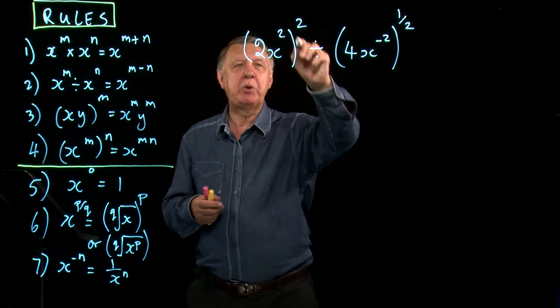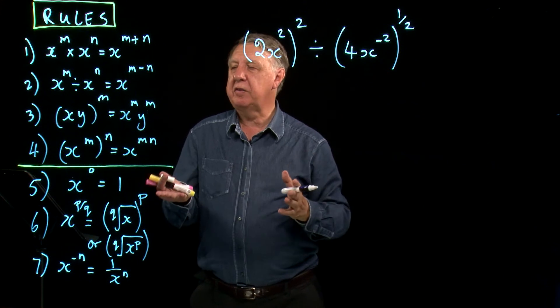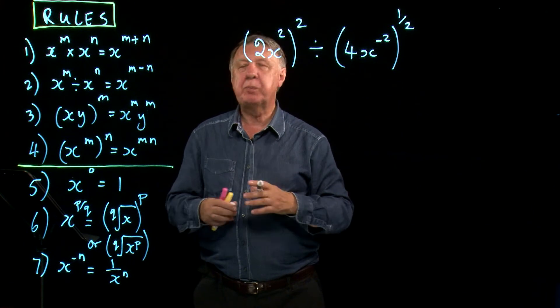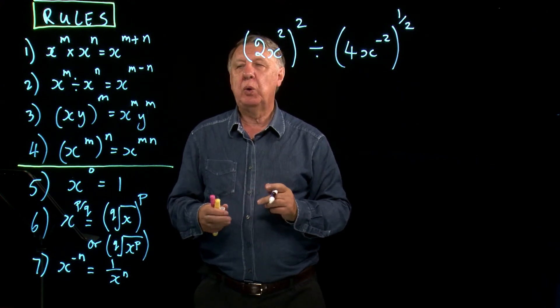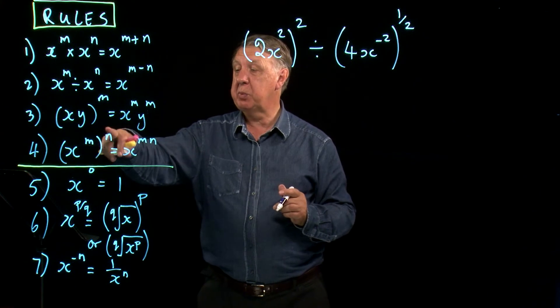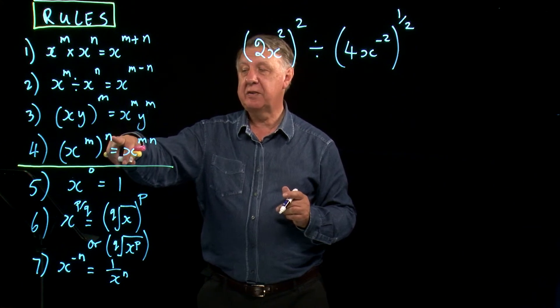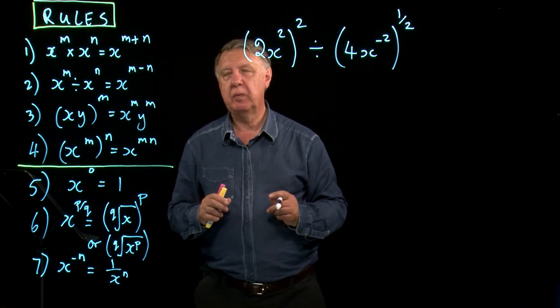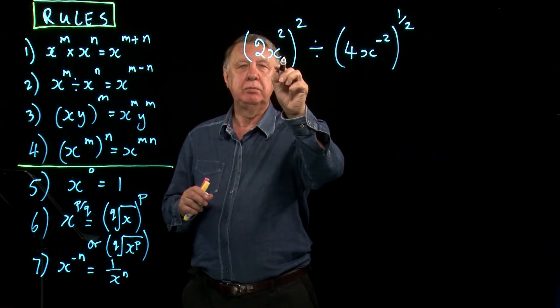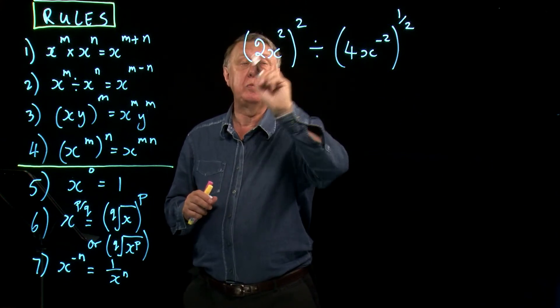So here we have a bracket squared. So again, if we're looking for rules, which rule down here would be appropriate? Well, if we look at this one here, we have a bracket to a power. So this in a way is the appropriate rule. The problem is that inside it there's not a single quantity, there is two things, two times x squared.